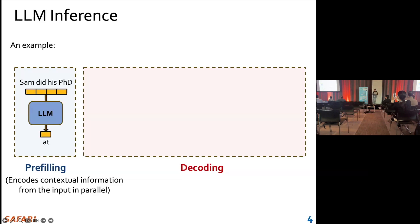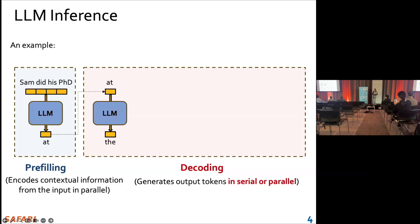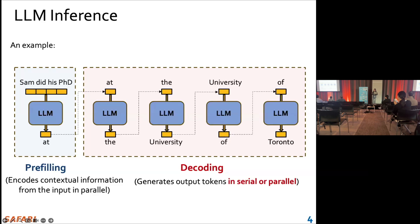And in the decoding stage, we generate all the output tokens serially. We use the last output token to generate the next output token, and we execute the iterations again and again until all the output tokens have been generated.